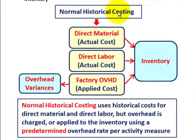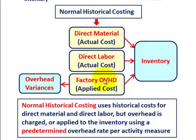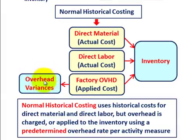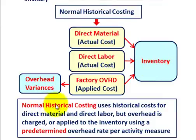For normal historical costing, direct materials and direct labor go in at their actual cost into the inventory account. The difference is factory overhead — it goes in at some applied or standard cost. Any difference between the standard established and the actual cost for factory overhead goes into an overhead variance account, which is closed to cost of goods sold or an expense account at period end. The overhead variance does not go into the inventory account. Normal historical costing uses a predetermined overhead rate per activity measure for the overhead.